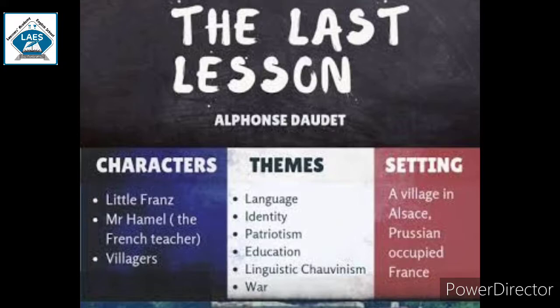The Last Lesson is set in the days of the Franco-Prussian War, around the year 1870-71, in which France was defeated by Prussia. Prussia then consisted of what are now the nations of Germany, Poland, and parts of Austria.